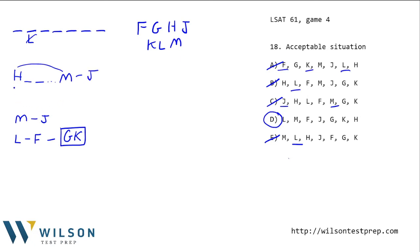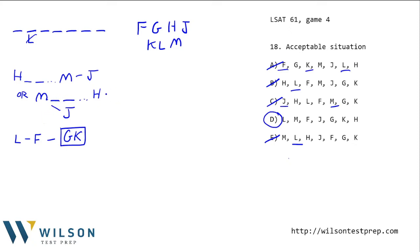M is before J, but it's a bit confusing because we don't know which is first — H or M. So I'll write this as two separate rules: either H, then two things, then M, then J; or M with two or more things, then H, with M still before J. J might be one of the things in between, or maybe it's after H. L is also a leading item — it comes before F, G, and K.